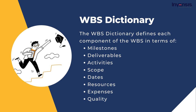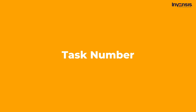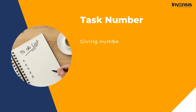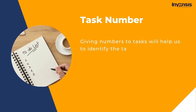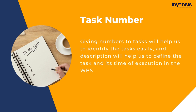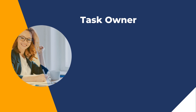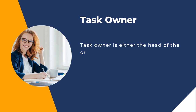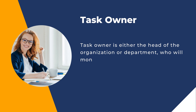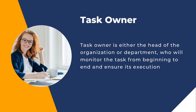Task Number and its Description: giving numbers to tasks will help us identify the tasks easily, and descriptions will help us define the task and its time of execution in the WBS. Task Owner is one of the most important things in WBS, where the task owner is either the head of the organization or department who will monitor the task from beginning to end and ensure its execution properly.